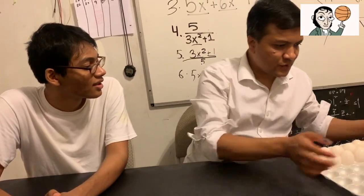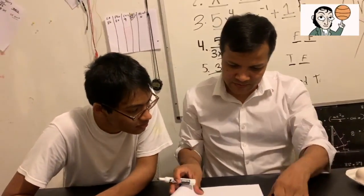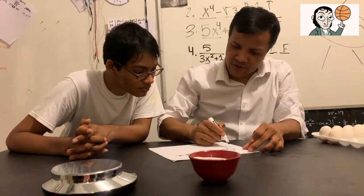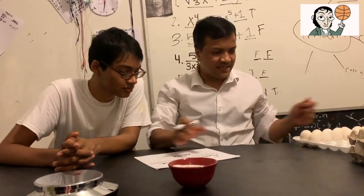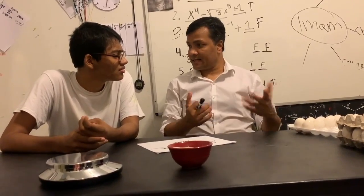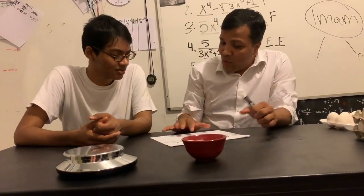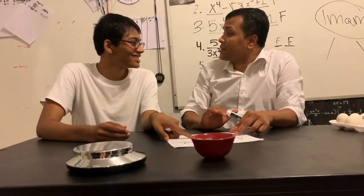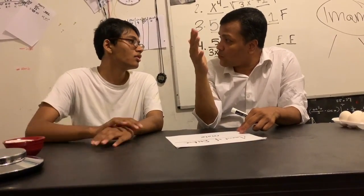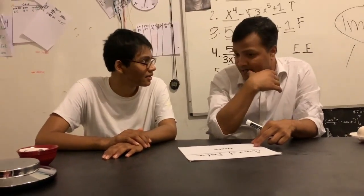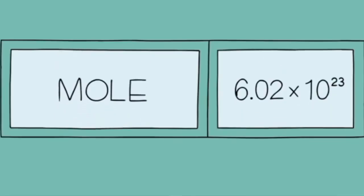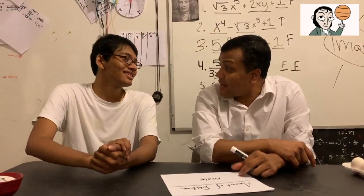One dozen! Exactly — one dozen. So amount of substance is equal to mole. Just like a dozen represents 12, the mole is a constant — a number. For example, 3.14 is a constant and we call it pi. Similarly, 2.718 we call e. Instead of saying 6 times 10 to the 23, you can call it a mole. That is Avogadro's number.